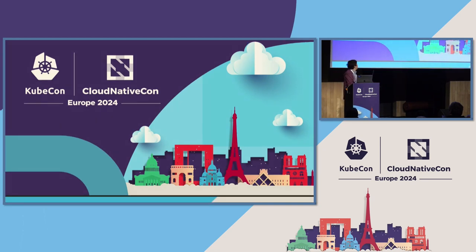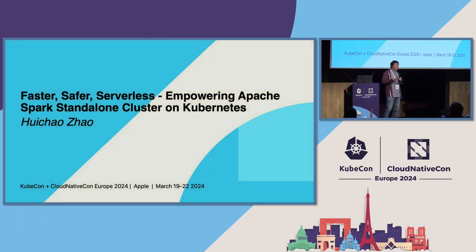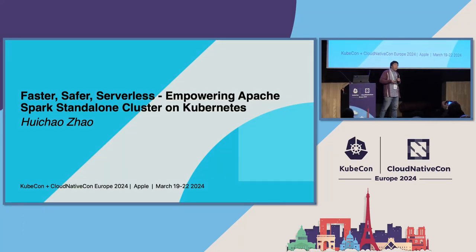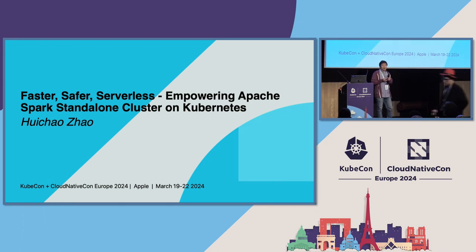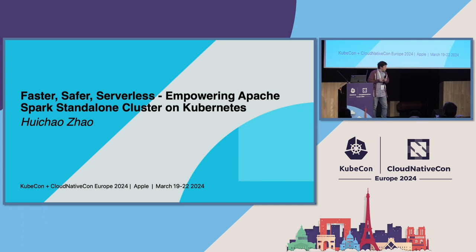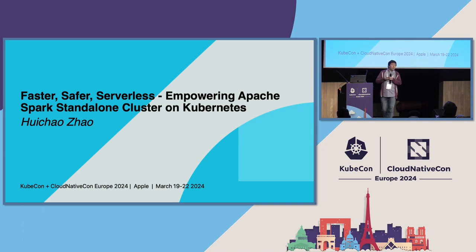I'm from Apple's AIML department. I have been working on designing, developing, and managing large-scale Spark clusters and Spark workloads on Kubernetes for around four years now. Throughout our journey, we have encountered some new and very crucial requests from our internal end users, which is inspiring us to explore a new way to allow users to run their Spark workloads on Kubernetes — which is running Apache standalone cluster on top of Kubernetes. Over the next 30 minutes, I'll try to do a deep dive into this topic.